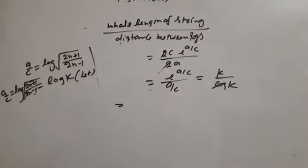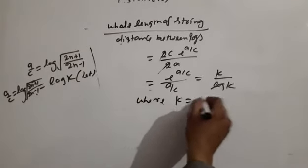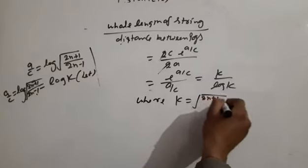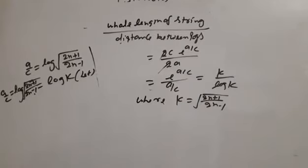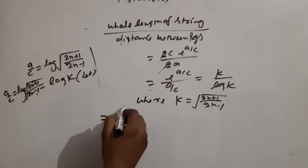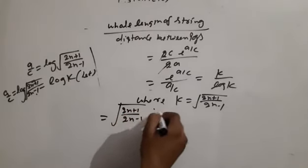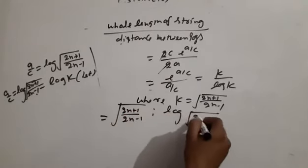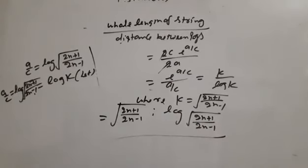Thus K = √((2N+1)/(2N−1)), and the answer to the question is proved. The whole length of the string to the distance between the pegs involves the ratio (2N+1)/(2N−1) as required.